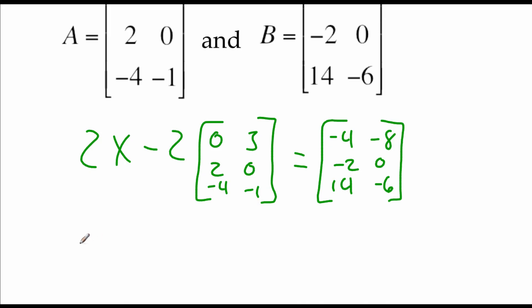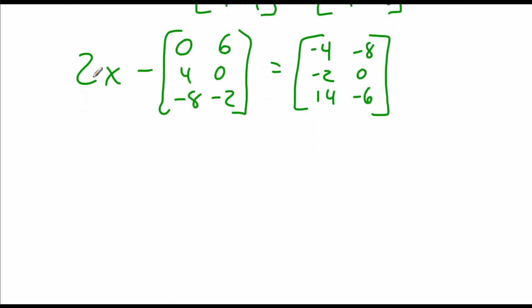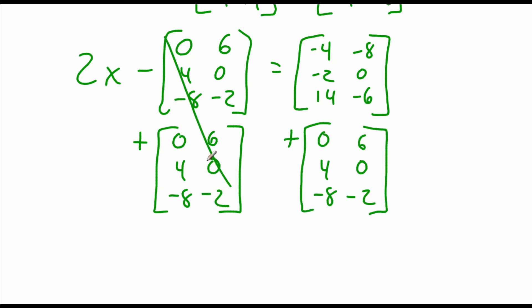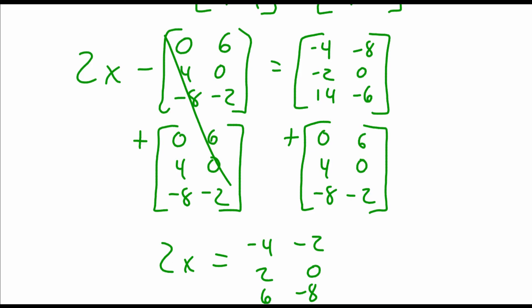I'm going to start cleaning this up a little bit by multiplying that 2 through matrix A here. So we end up with 0, 6, 4, 0, negative 8, negative 2 as that matrix, and it still equals this B matrix. We're working on getting this x matrix all by itself. So our first step is going to be to add this matrix over to the right-hand side. Our matrices on the left are going to cancel out. So we'll have 2x equals. Adding these two matrices together, we get negative 4, negative 2, 2, 0, 6, negative 8 as our new matrix.